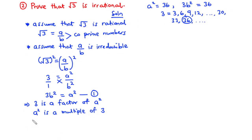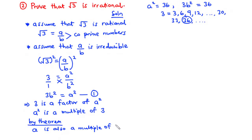Now, if we are saying that a squared is a multiple of 3, then by theorem, a is also a multiple of 3. We can use the same example: a squared equals 36, and for that matter, a equals 6. If a squared, which is 36, is a multiple of 3, then a, which equals 6, is also a multiple of 3.